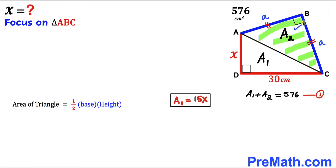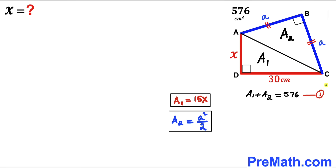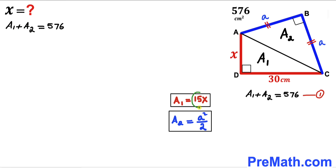Now let's focus on right triangle ABC using the same area formula: area equals one half times base times height. For triangle ABC, the base is lowercase a and the height is lowercase a as well, so A sub 2 equals one half times a times a, which gives us a squared divided by 2. Looking back at equation 1: A sub 1 is 15x and A sub 2 is a squared divided by 2.